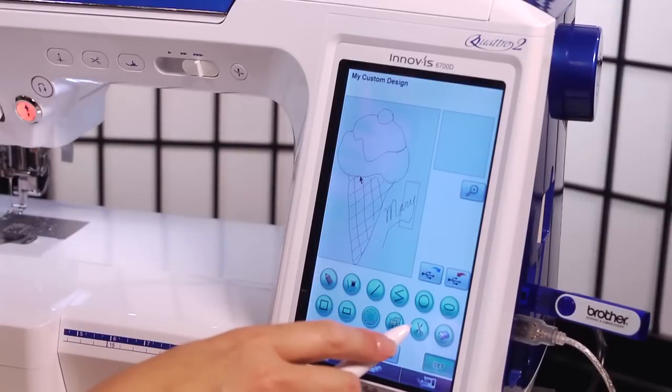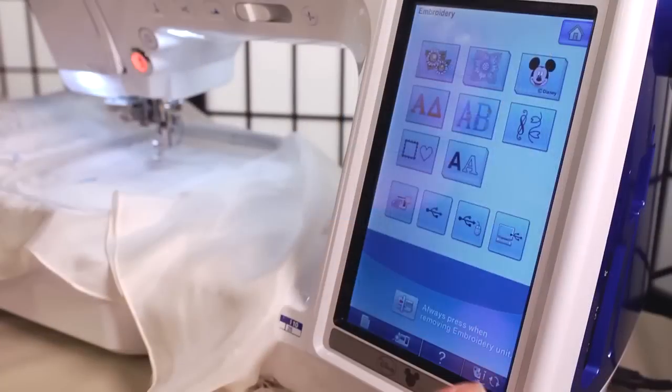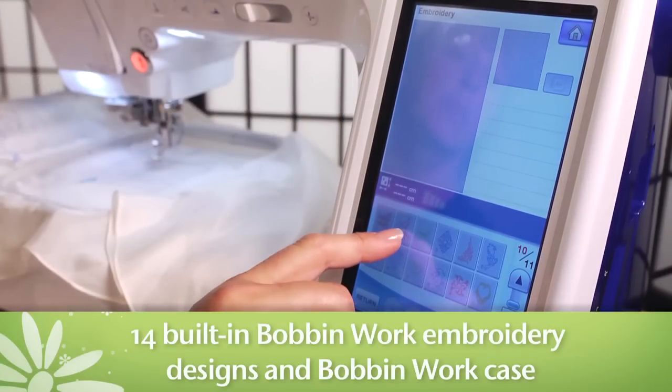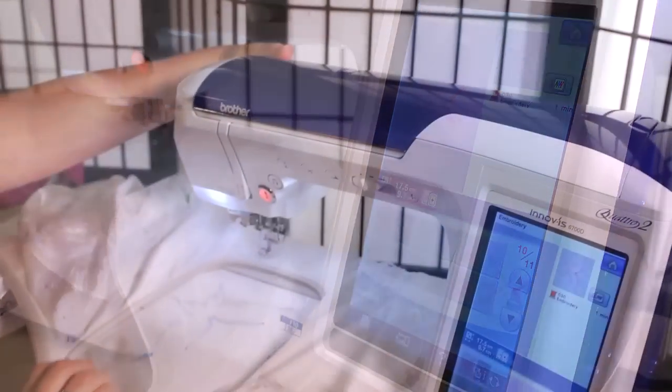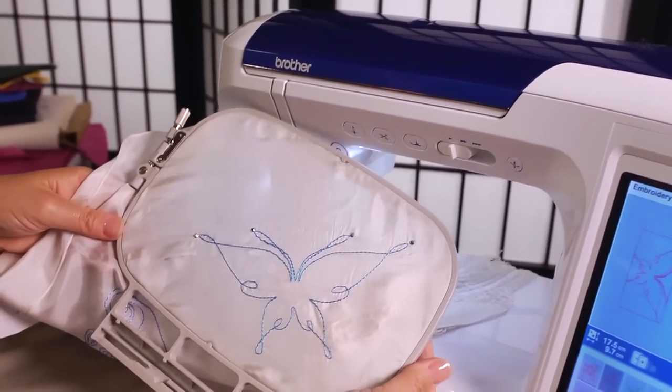You can even edit your creation on the LCD display to create the perfect design. And for that extra special touch, use any of the 14 built-in Bobbin Work embroidery designs and included Bobbin Work case to create beautifully raised upside-down three-dimensional embroidery embellishments.